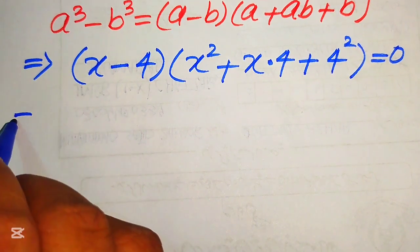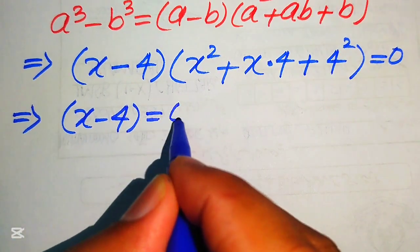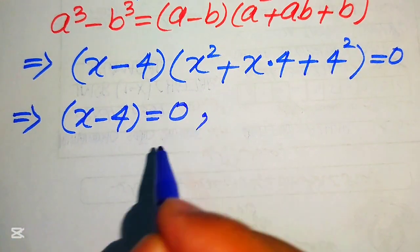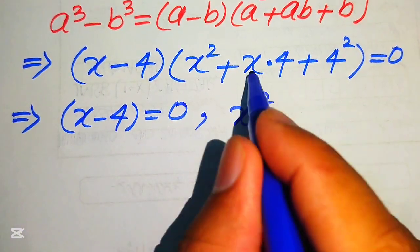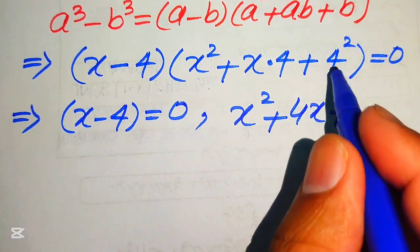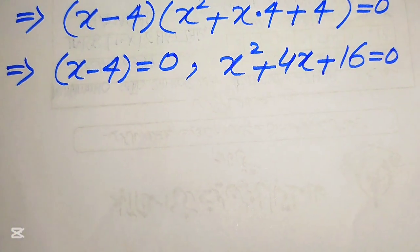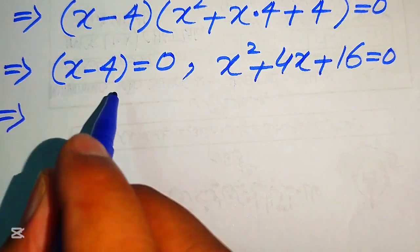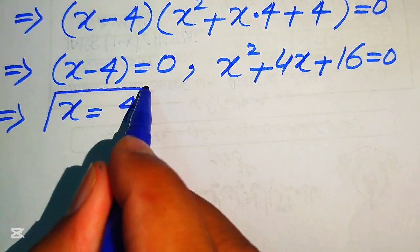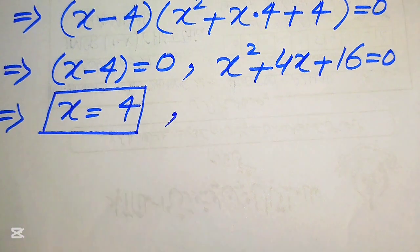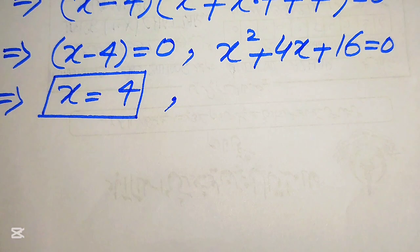Further, we divide this equation into two cases. The first case is x minus 4 equals 0. The second case is the quadratic factor equals 0, so we have x squared plus 4x plus 16 equals 0. From the first case we easily get x equals 4. This is the first real root of the given equation. To find the other roots we need to solve this quadratic equation.